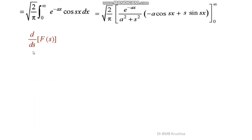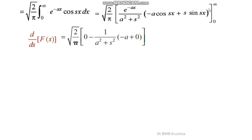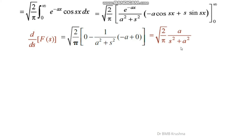Applying the limits: when x → ∞, e^(-∞) = 0, so that term vanishes. When x = 0, e^0 = 1, cos(0) = 1, sin(0) = 0, giving 1/(a²+s²) · (−a · 1 + s · 0) = −(−a)/(a²+s²) = a/(a²+s²). Therefore d/ds[F(s)] = √(2/π) · a/(s²+a²), which is a first-order ODE.